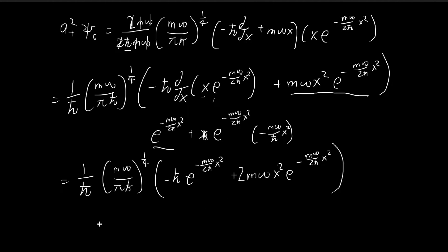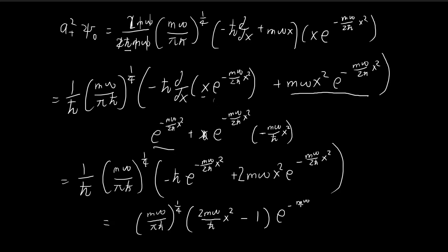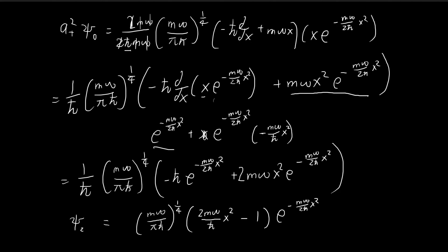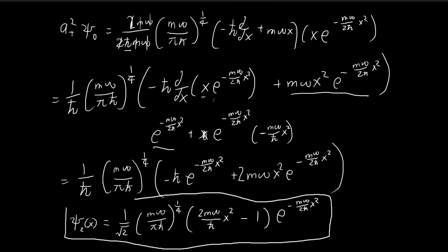We can see a parallel between the two cases — after applying d/dx, we got a term similar to the trailing term and picked up a factor of 2. Now we just do a bit of further simplification. A neat way to group the answer is to keep the constant outside and place ℏ on the inside: 2mω/ℏ · x² − 1, times the exponential. This is the expression for a+² ψ₀. To arrive at ψ₂, we multiply by 1/√(2!) = 1/√2. So the second stationary state equals 1/√2 times this entire expression.